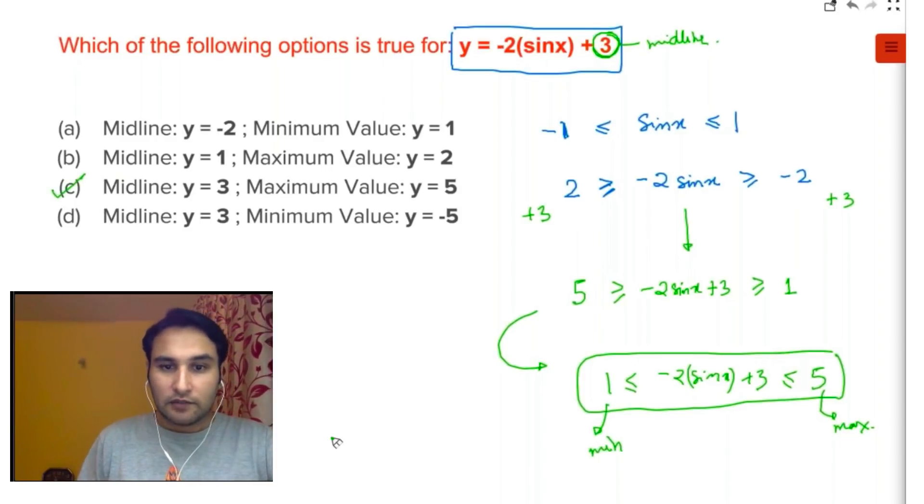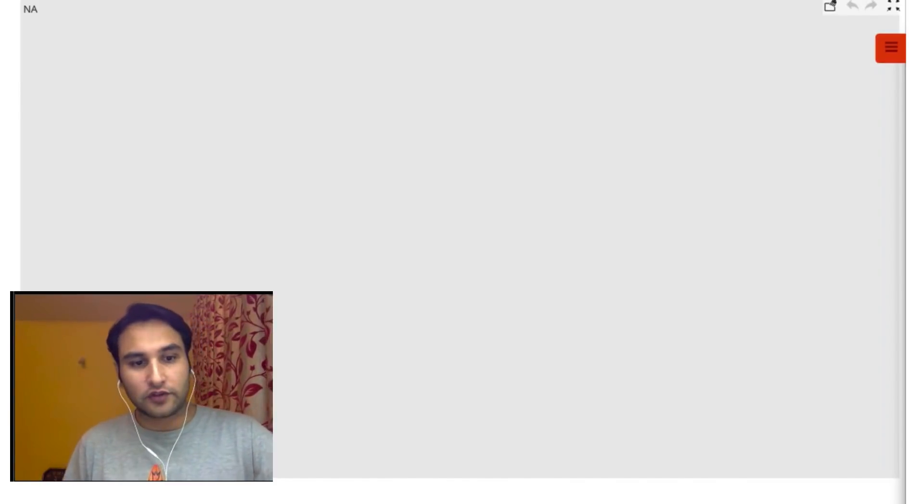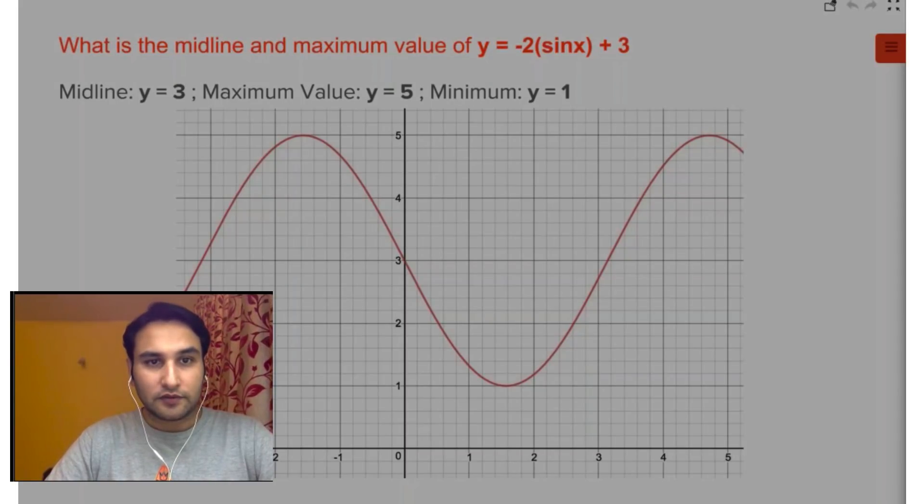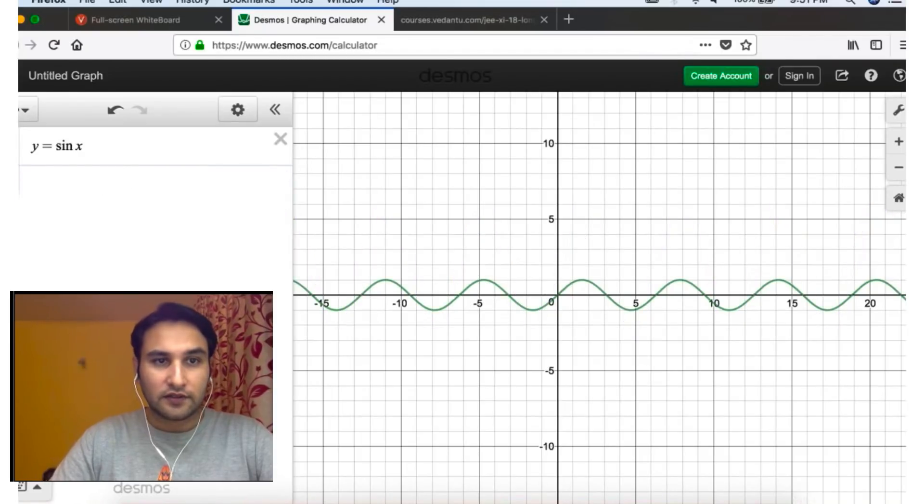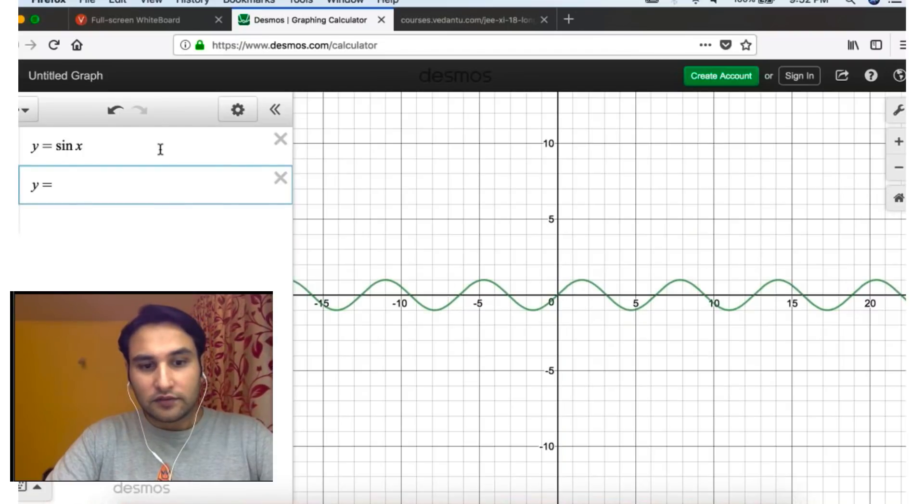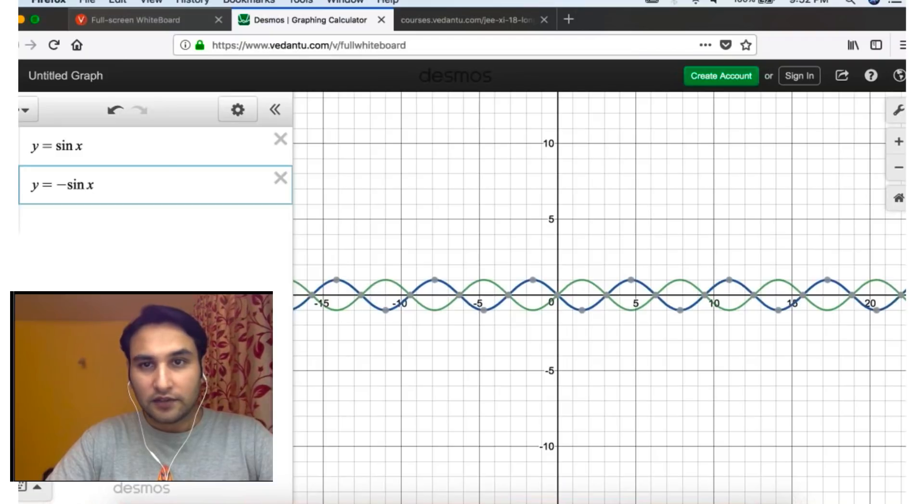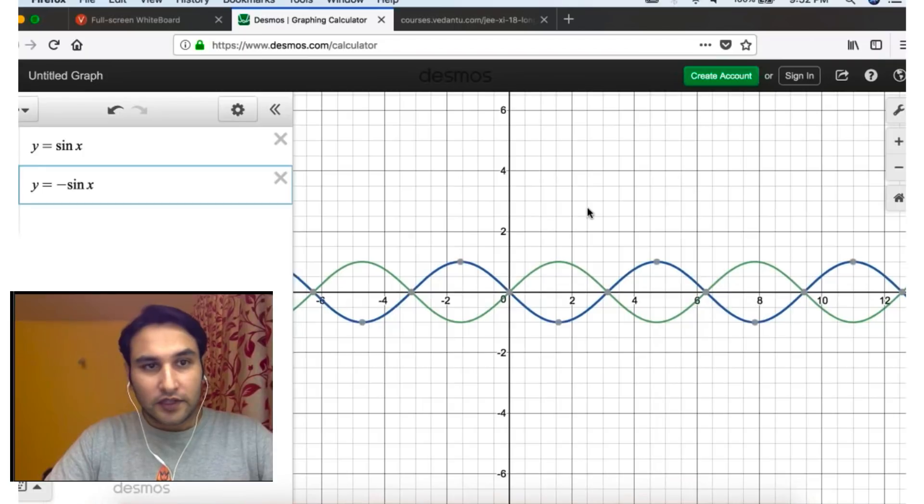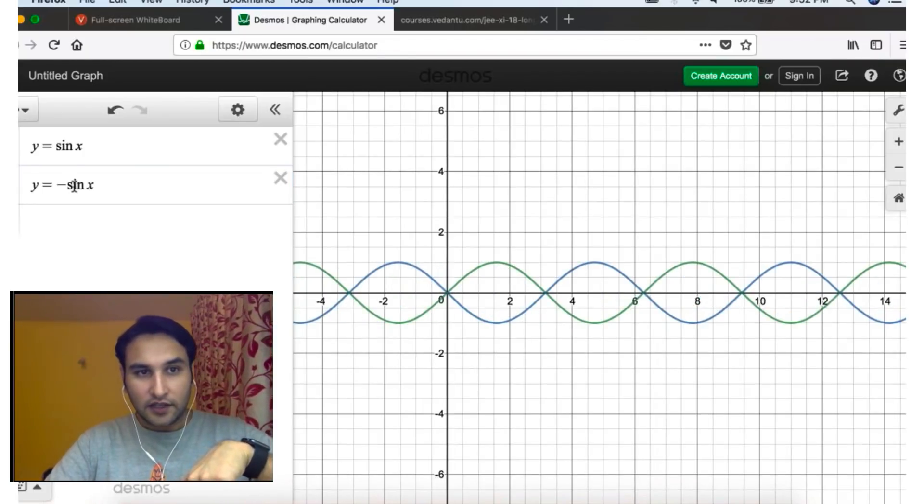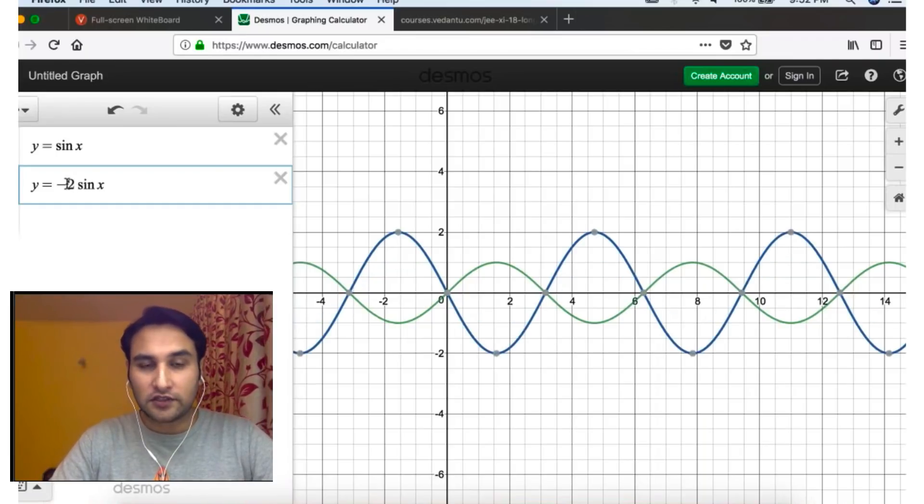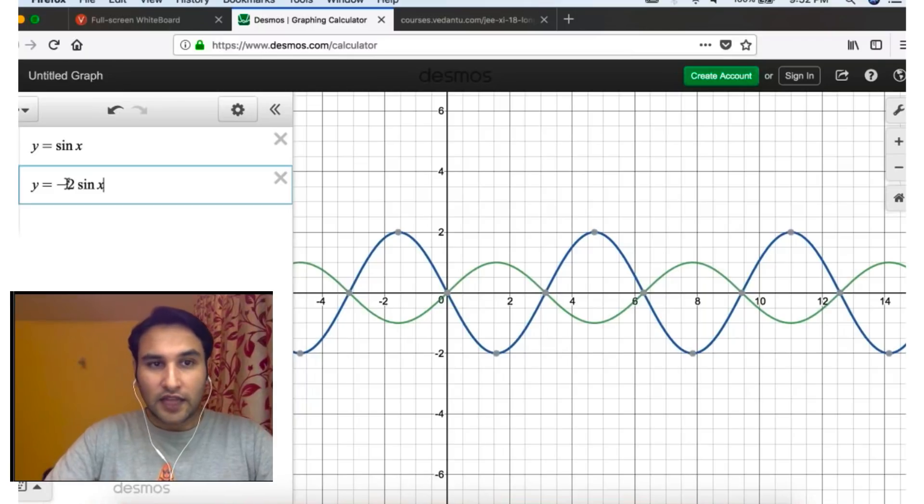But if you plot the graph, see, this is how the graph will look. So what happened? Let's visualize step by step. First you had y equals sine x. Then what you did: you multiplied it with a minus sign—minus sine x. You know, first let's multiply by minus sign, so it became minus sine x, inversion along the x-axis. Now if you multiply by 2, it will get stretched. Now it got stretched.